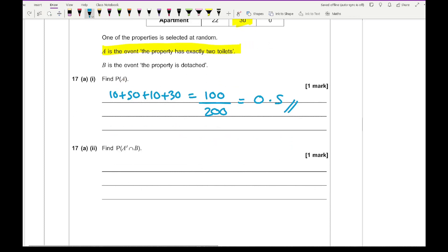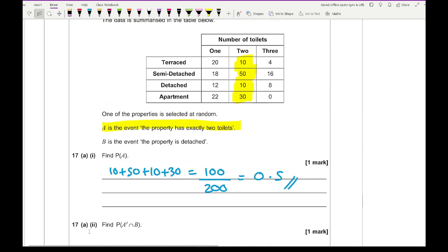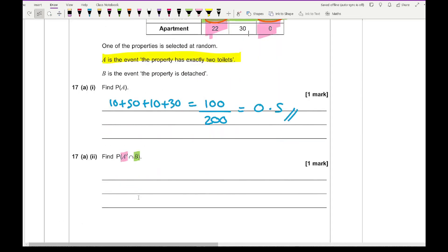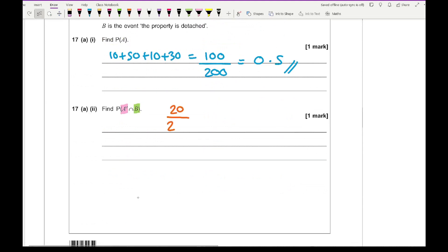It then says find the probability of not A and B. Not A is this pink section, and B is the event that the property is detached, which is these ones here. So the probability of not A and B are the bits that are shaded in twice. The bits that are shaded in twice are this one and this one. So that's going to be 20 out of 200, which if I simplify gives me 1 tenth or 0.1.